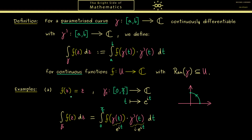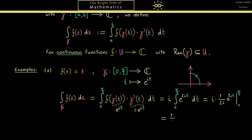Since f is the identity, we multiply the two terms together, putting i in front of the integral. Inside we have e^(2it). We can use the antiderivative of this function, which is (1/2i) e^(2it), evaluated at 0 and pi/2. We cancel the i factors and substitute pi/2 and 0, getting (1/2)(e^(i pi) - e^0) = (1/2)(e^(i pi) - 1). Since e^(i pi) = -1, we have (-1 - 1)/2 = -1. So the value of this integral is minus 1.